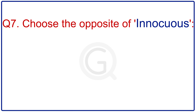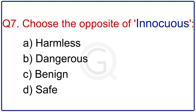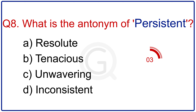Choose the opposite of innocuous. The right answer is dangerous. What is the antonym of persistent? The correct answer is inconsistent.